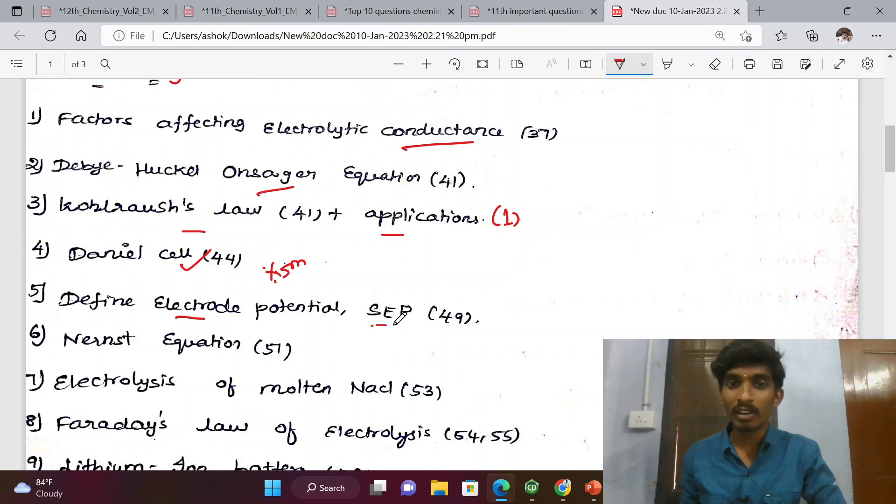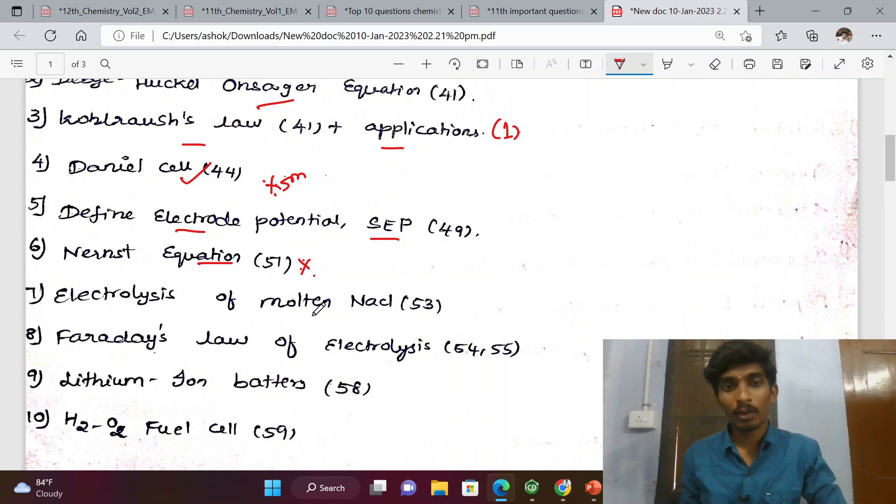Define electrode potential, standard electrode potential, Nernst equation (very important, 5 mark), electrolysis of molten NaCl (very important question).